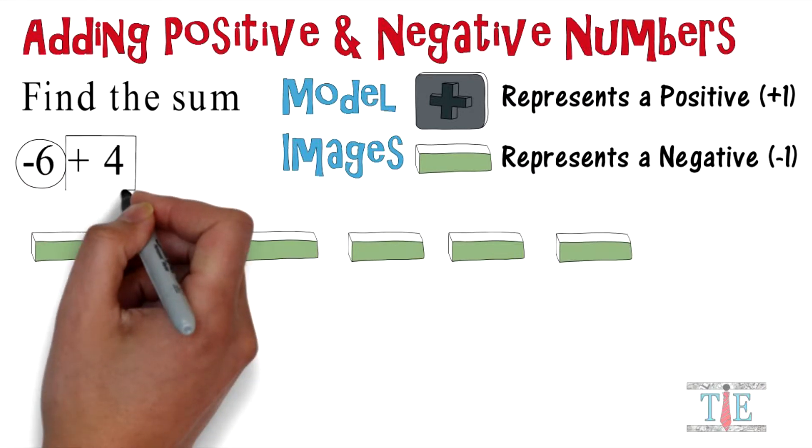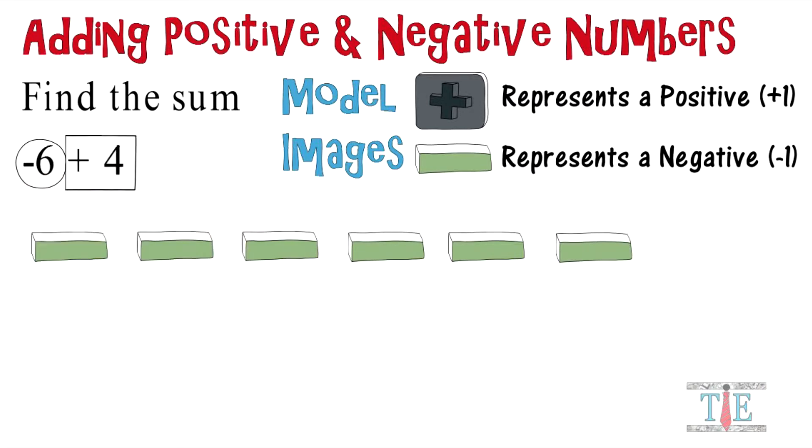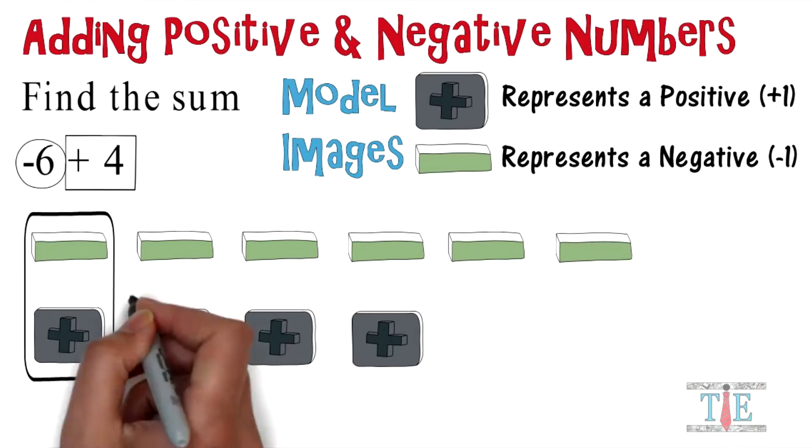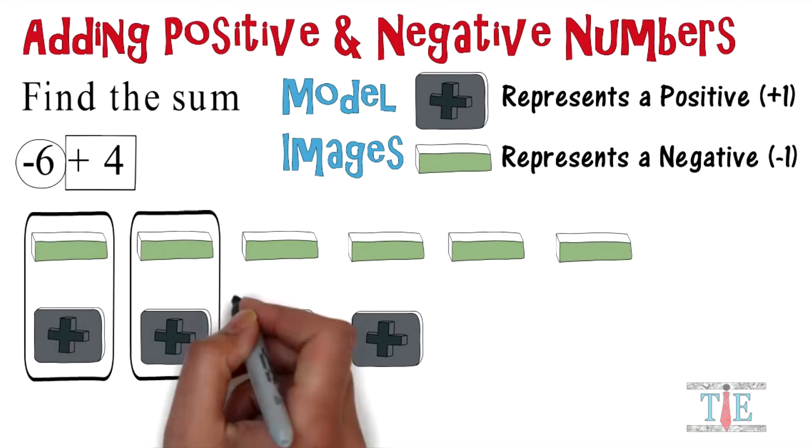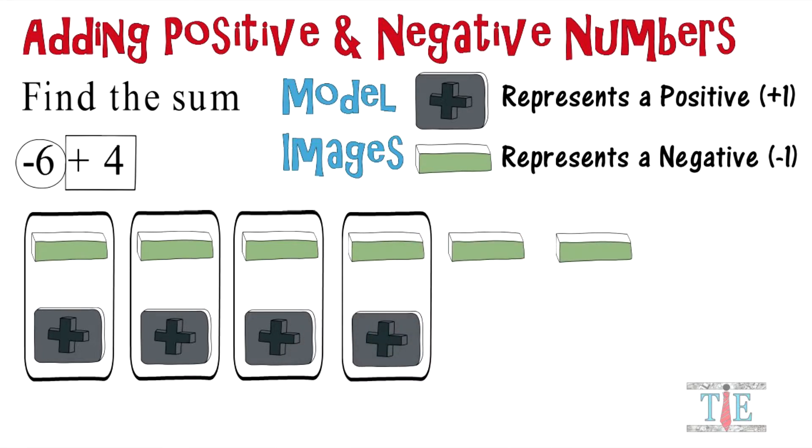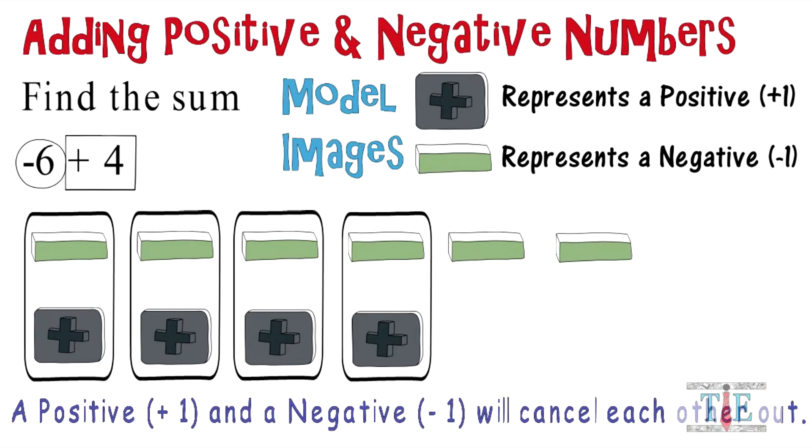Next up we have a positive four, so we're going to model four positive signs: one, two, three, and four. A positive and negative will group together. We have one, two, three, four groups, and remember a positive one and a negative one will cancel each other out.